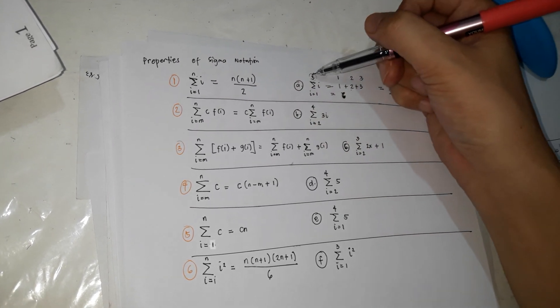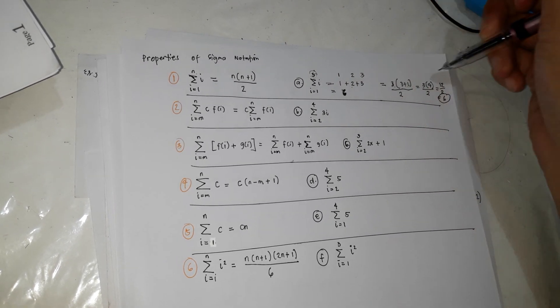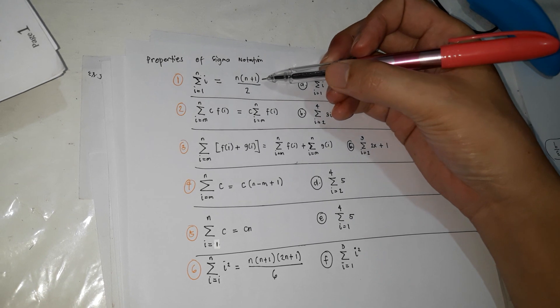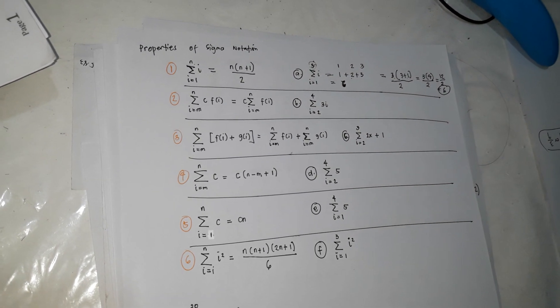Now we know na mali pala yung answer natin dito. So kasi 1 plus 2 plus 3 is 6. So this is the formula ng n times n plus 1 over 2. Kasi mas mahirap na lang ba kung 100 dito sa taas? However, if you're going to use only this formula, it would be a lot easier.